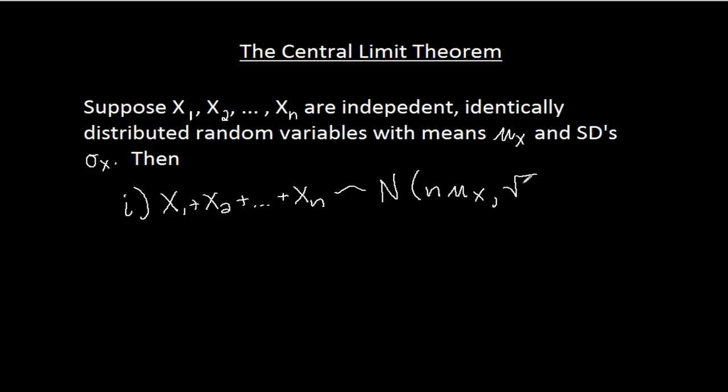And that normal distribution will have mean n times the mean of the random variables and standard deviation square root of n times the standard deviation of the random variables. Now this is true only for large n. I'm going to put that down at the bottom here. For large n.